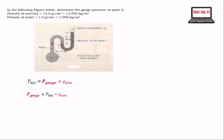What we need now is to find the absolute pressure at A. After getting the absolute pressure at A, we are going to subtract the atmospheric pressure from it. C is equal to B.